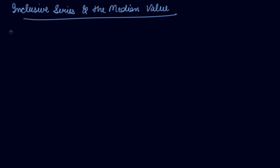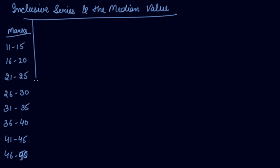So first let's understand the inclusive series. Let's suppose you are given the marks that is from 11 to 15, then 16 to 20, 21 to 25, 26 to 30, 31 to 35, 36 to 40, 41 to 45, and 46 to 50. So this is your inclusive series.